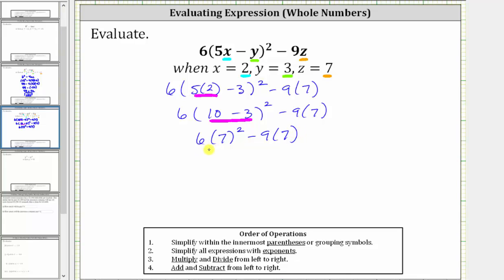The next step is to simplify the exponents, which means we simplify 7 squared, which equals 7 times 7, which is 49, giving us 6 times 49, minus 9 times 7.